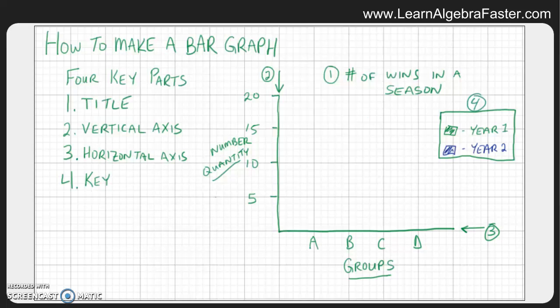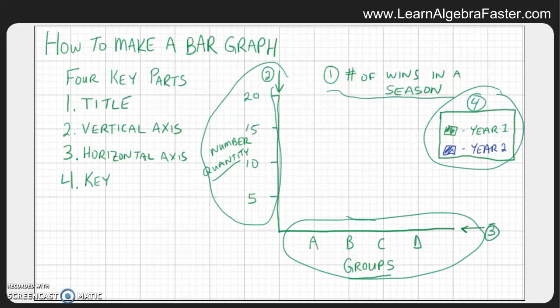So you can easily identify and easily make a bar graph if you know these four key parts of information. Let's go ahead and let's actually do an example where we talk about the title, the vertical axis, the horizontal axis, and the key, and let's take real data and actually make a bar graph using these numbers.